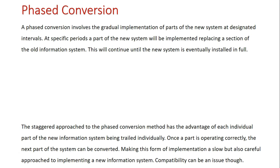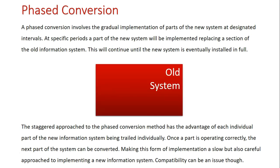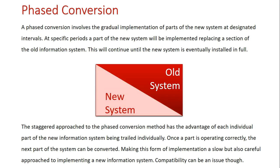The third conversion method is the phase conversion, which is the gradual implementation of parts of the new system at designated intervals. At specific periods, the new system will be implemented, replacing a section of the old information system, and this will continue until the new system is eventually installed in full. We might have the old system here, and then over time we are replacing it slowly with parts of the new system. This staggered approach has the advantage of each individual part of the new information system being trialed individually. Once a part is operating correctly, the next part of the new system can then be converted. Using this form of implementation is slow, but it is also a very careful approach to implementing a new system.